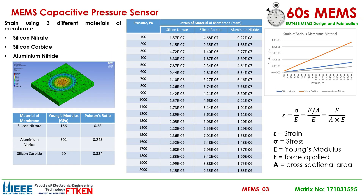Hi, I'm Uyjia Fu and now I'm going to discuss the difference of strain in our design using different membrane materials, which are silicon nitrate, silicon carbide, and aluminum nitride. The snapshot of the simulation and material properties is shown on the left of the slide. The result of strain in the range of 100 Pa to 2000 Pa is recorded in the table shown on the middle of the slide, and the corresponding graph is shown on the right. From the strain formula, we can notice that strain depends on the Young's Modulus of a material, the force applied onto the membrane, and the cross-sectional area of the membrane. The design will have a higher strain when silicon carbide is chosen due to its lower Young's Modulus.